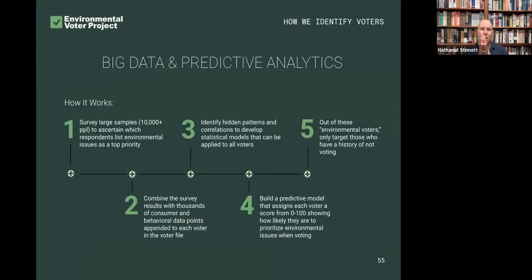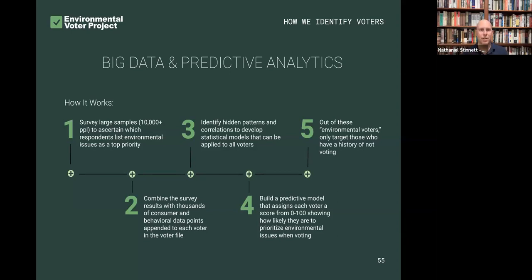In a nutshell, the way that we build a predictive model is as follows. First, we survey enormous numbers of people — tens of thousands of voters. We can get away with doing that because we're only asking one question. In this instance, we're asking: what's your most important political priority? Let's say that we're in Pennsylvania, and we survey 10,000 people and 1,000 of them say climate change is their number one priority — or clean air, clean water, environmental justice, or some objectively obvious environmental issue.